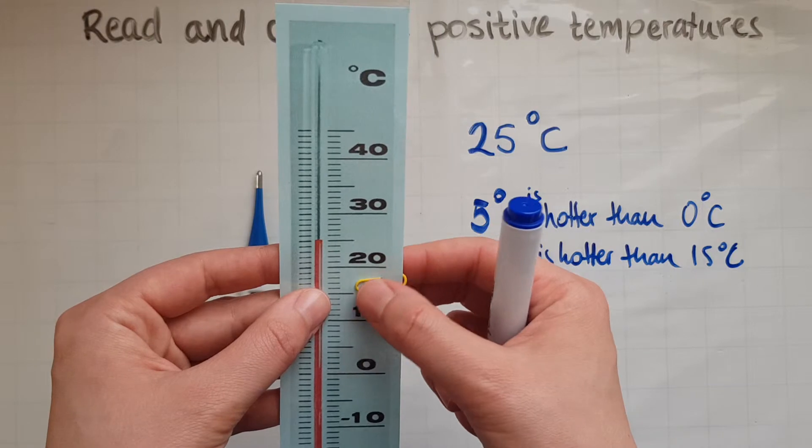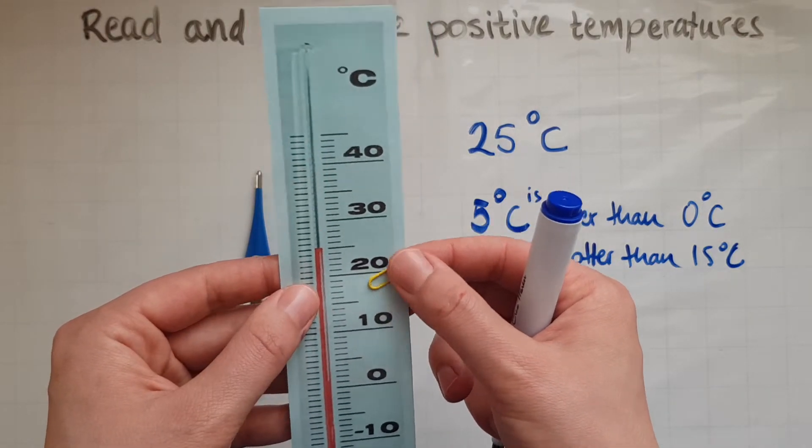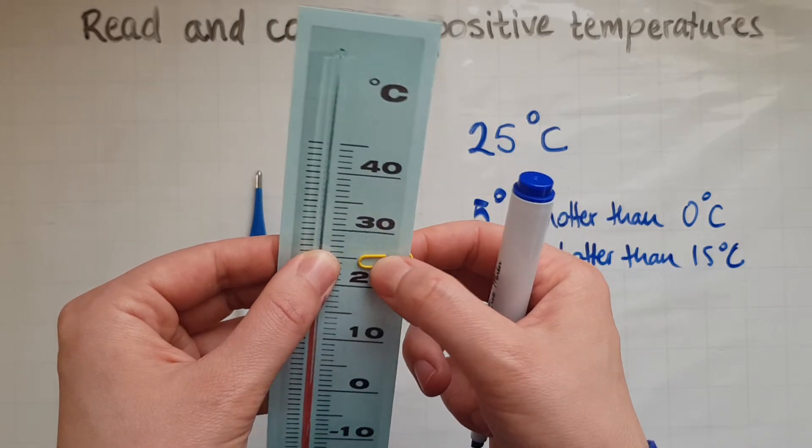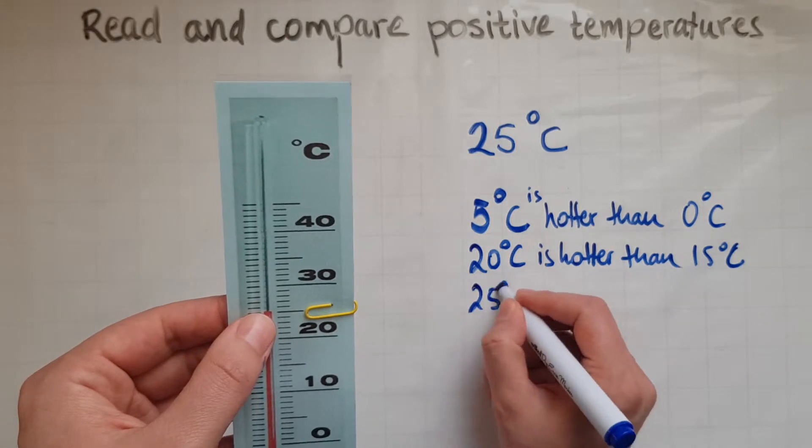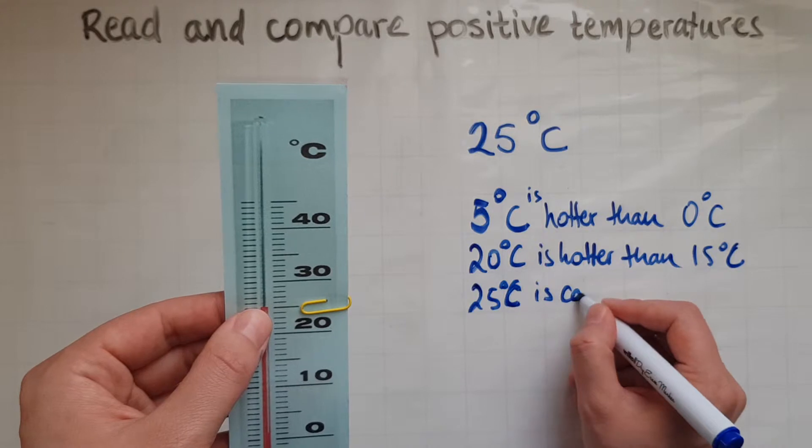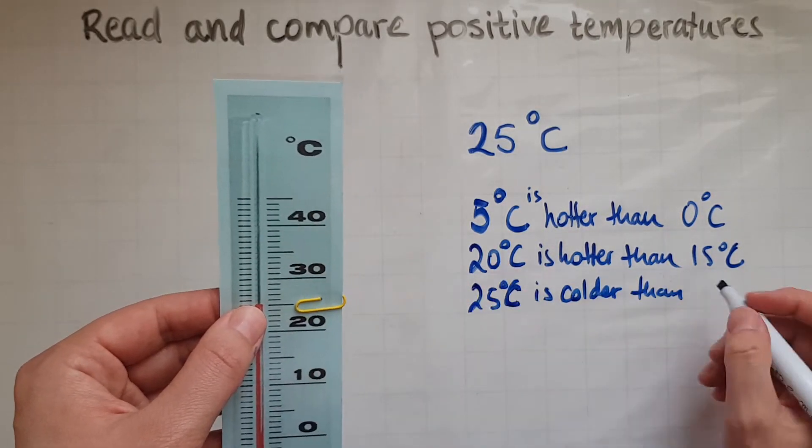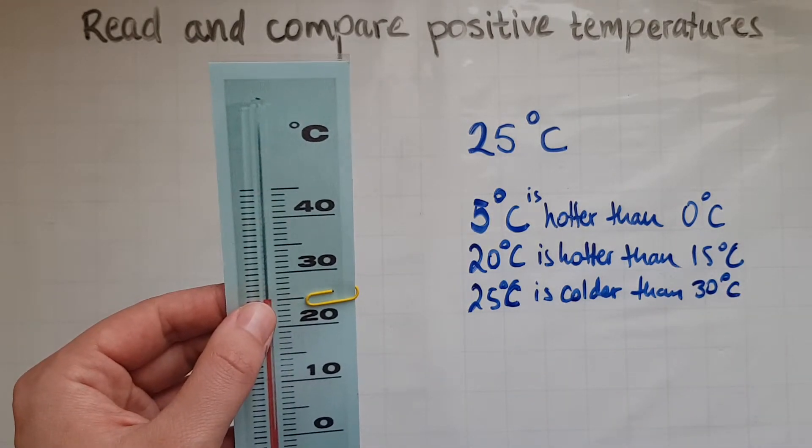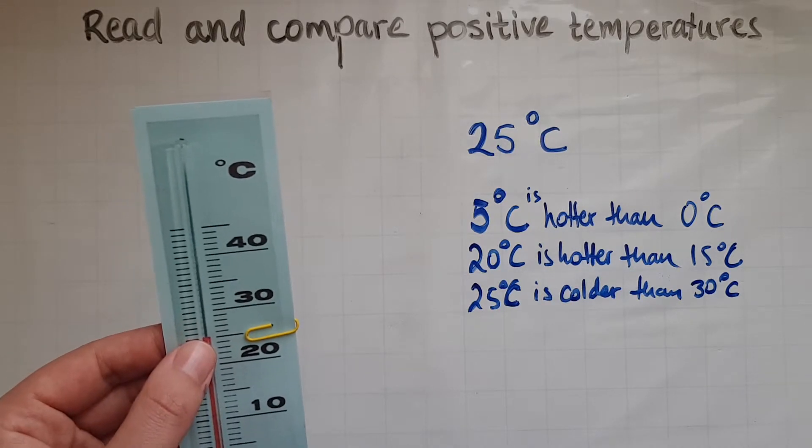And if we're trying to compare 25 with 30, so there is 25 compared with 30. So 25 degrees Celsius is colder than 30 degrees Celsius. So that kind of compares the temperatures.